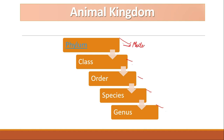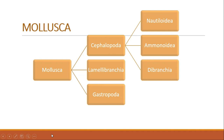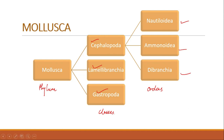Mollusca is a phylum, and under Mollusca we will be looking at different classes and orders. The phylum Mollusca is divided into several classes: cephalopods, lamellibranchia, and gastropods. In cephalopods we have different orders — first we have Nautiloidea, then Ammonoidea, and then Dibranchia. We'll be looking at these cephalopods, lamellibranchia, and gastropoda in detail.